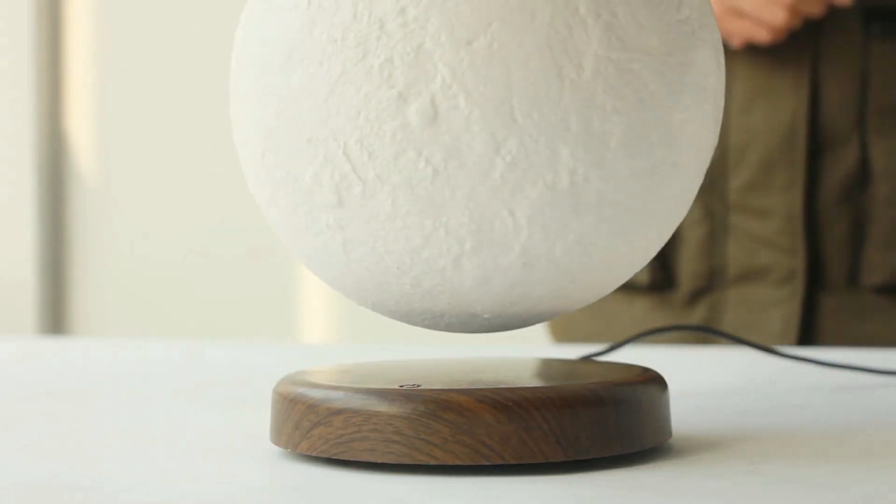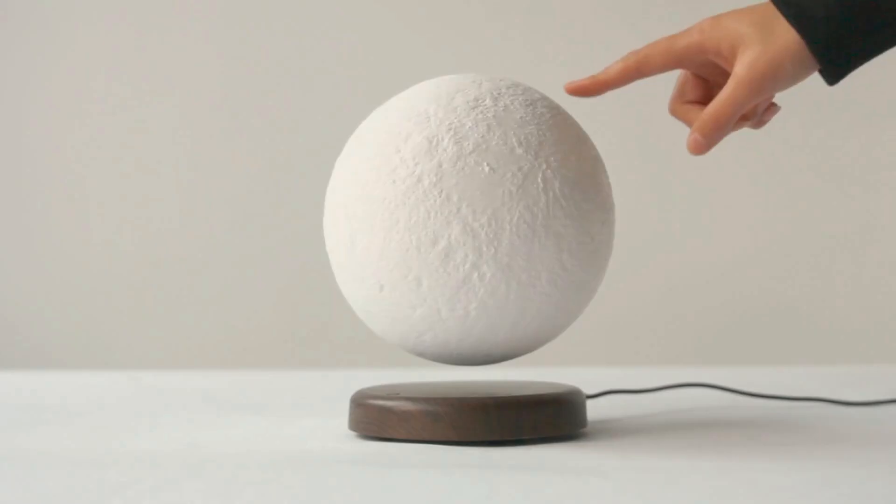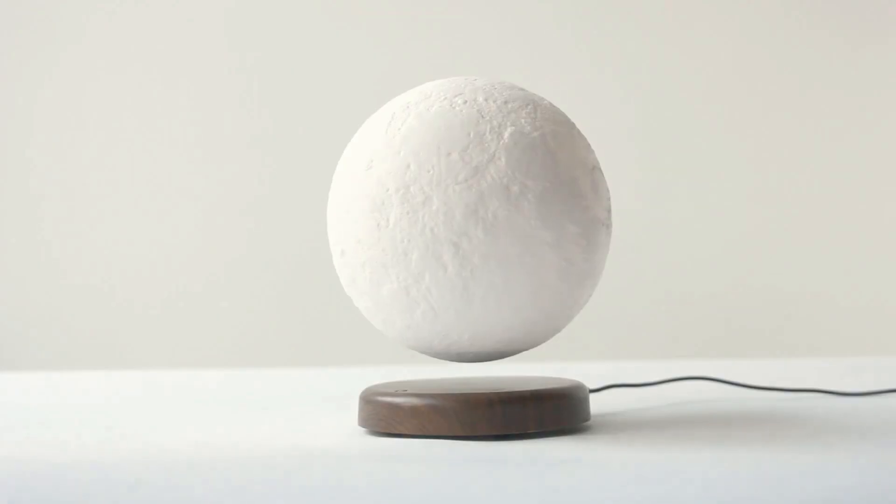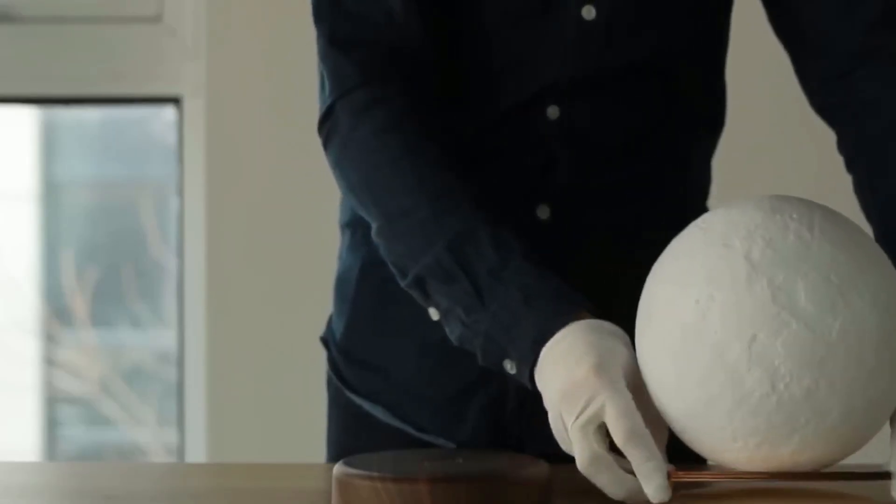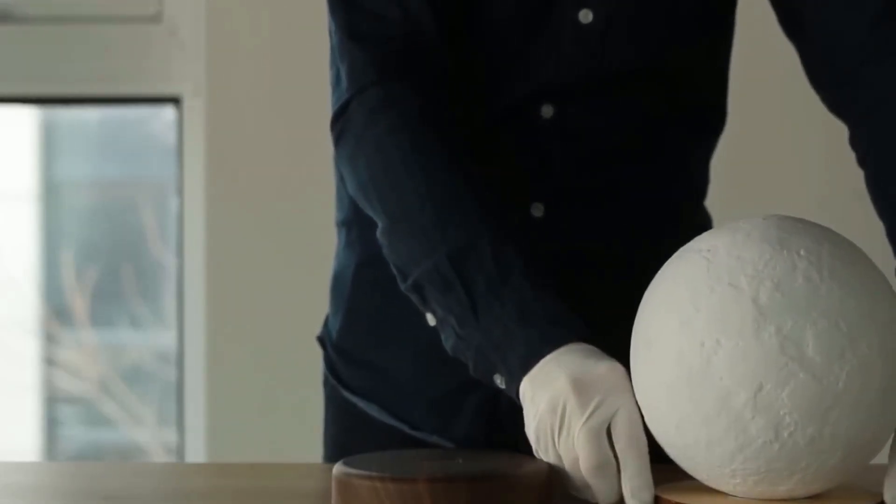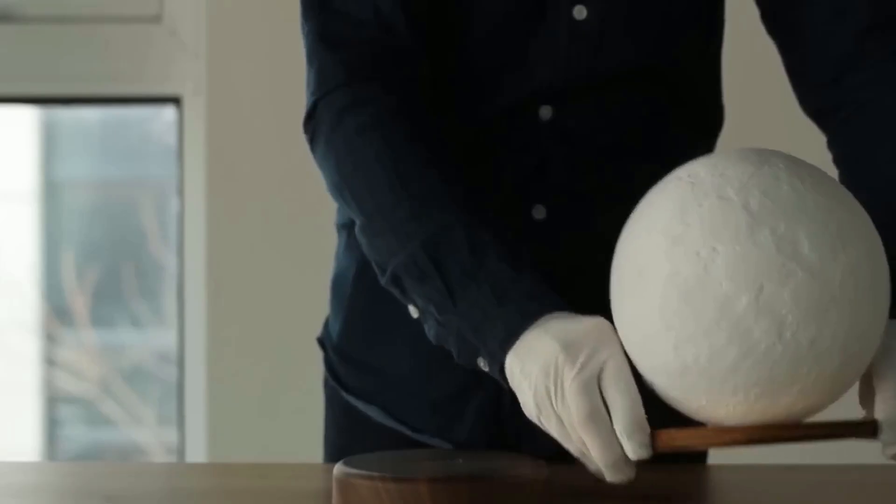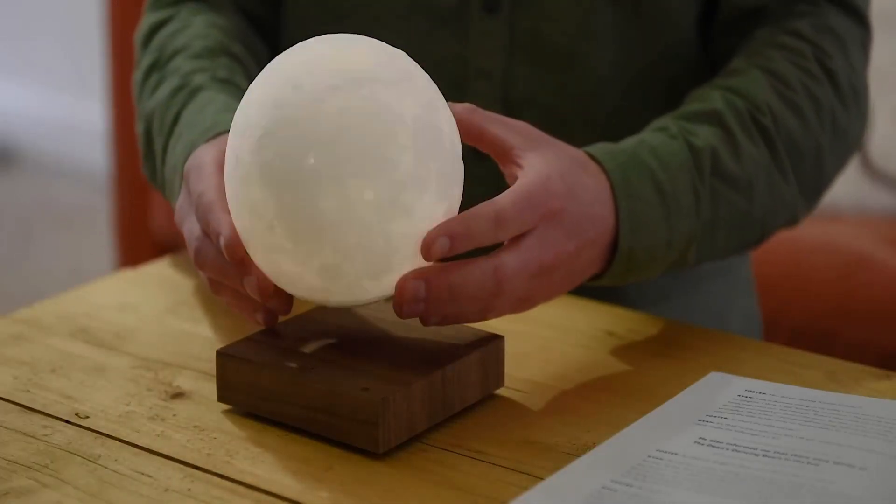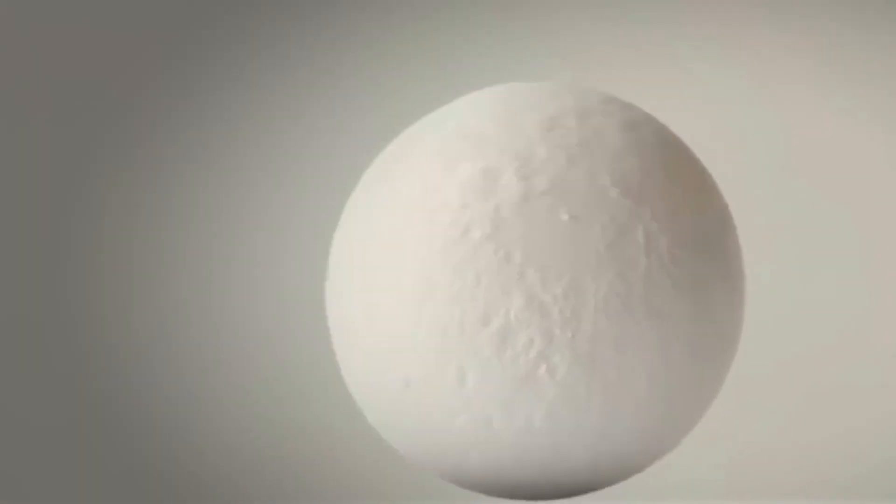Inside the wooden base is a powerful array of electromagnets, while the 3D-printed moon itself contains another magnet. The base constantly adjusts its magnetic field, pushing and pulling on the moon to keep it perfectly balanced in the air. This delicate dance of opposing forces creates a stable, silent levitation that beautifully mimics our celestial neighbor's serene glide through space.